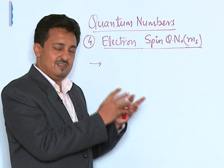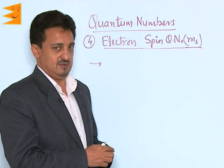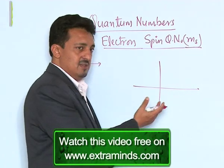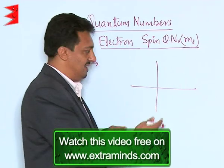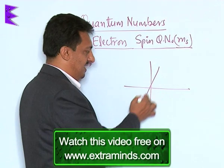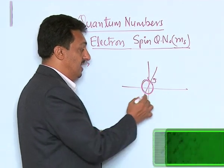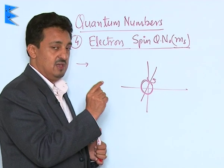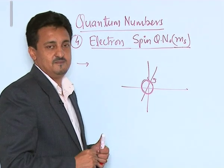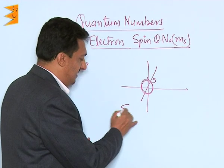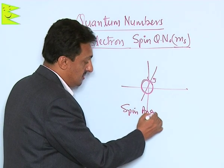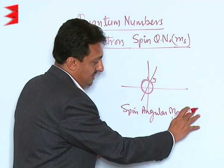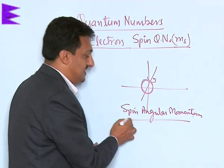This fourth quantum number came from spectroscopy. We know that an electron has charge and mass, but importantly, if it is moving along an axis, this moving charged electron also has its own spin angular momentum, which is a vector quantity.